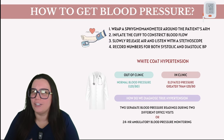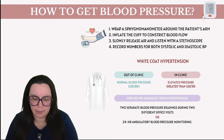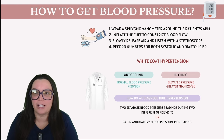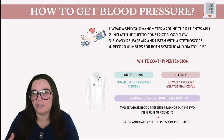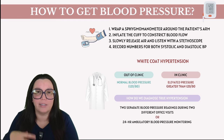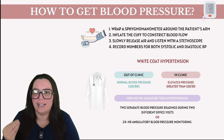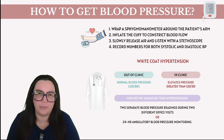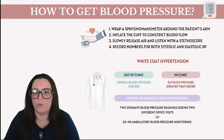So diagnosing hypertension seems pretty straightforward, right? We wrap an inflatable cuff around the patient's arm, inflate it to constrict the blood flow, then slowly release air to listen with our stethoscope to get those systolic and diastolic blood pressure numbers. Simple — but maybe not. There is a twist.